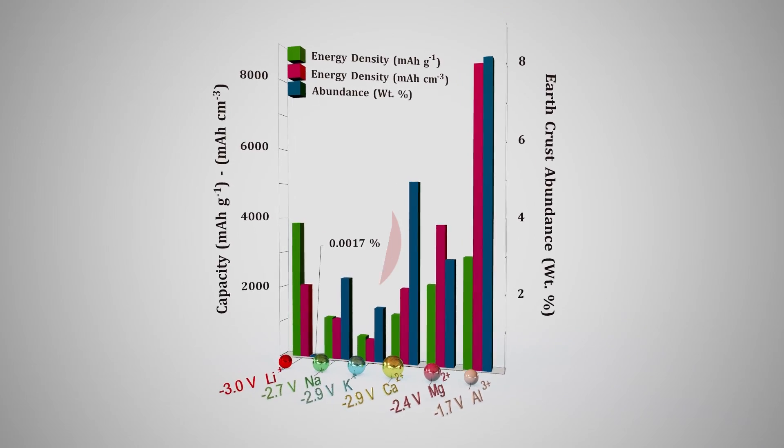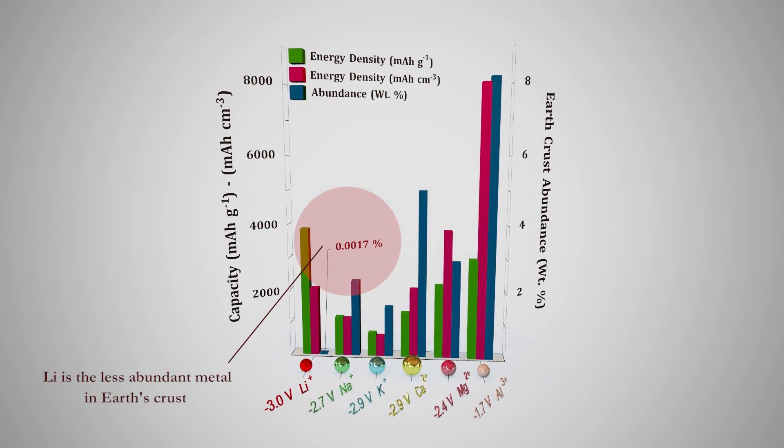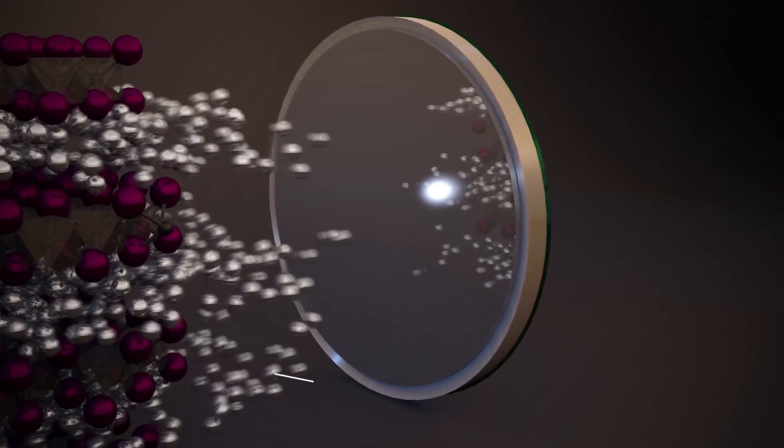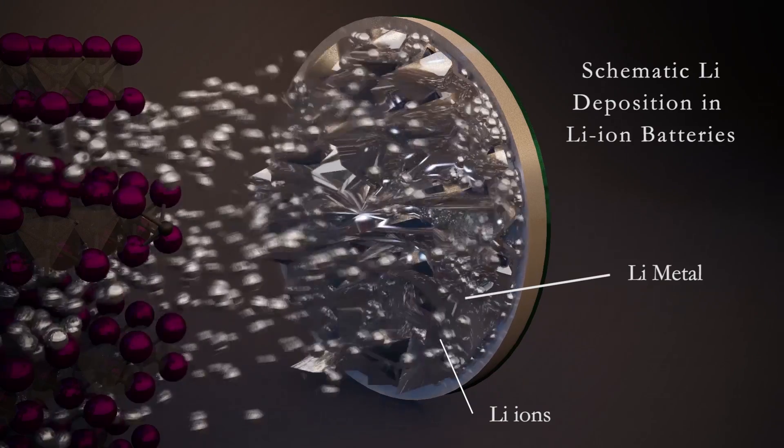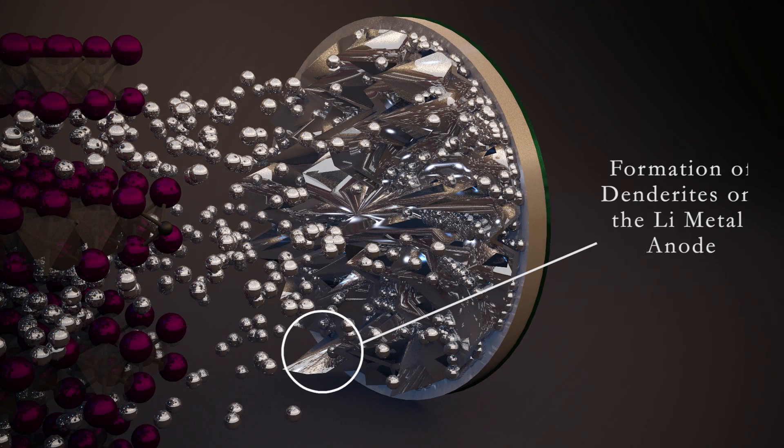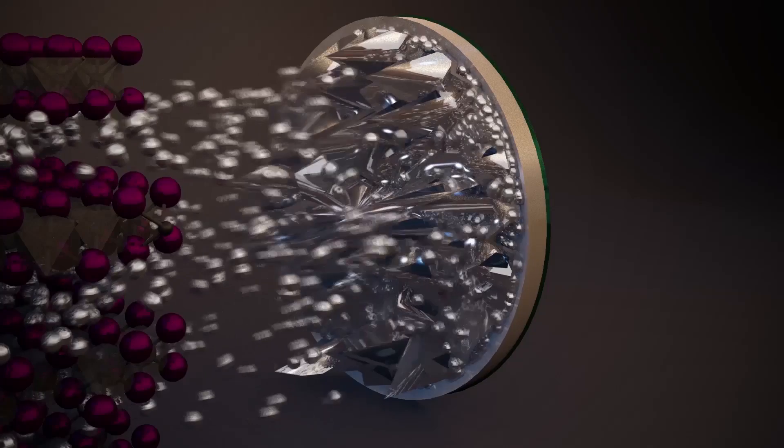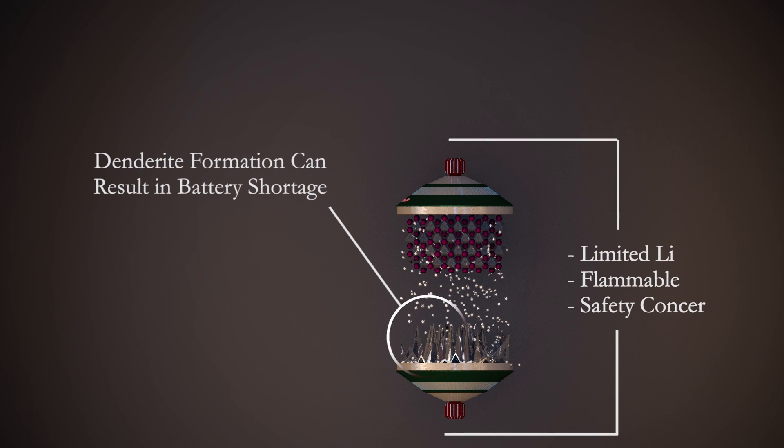There are several problems associated with current lithium-ion batteries, such as limited lithium resources, inability to use lithium metals directly in battery cells as they form dendrites and result in cell shortages, and also their flammability.